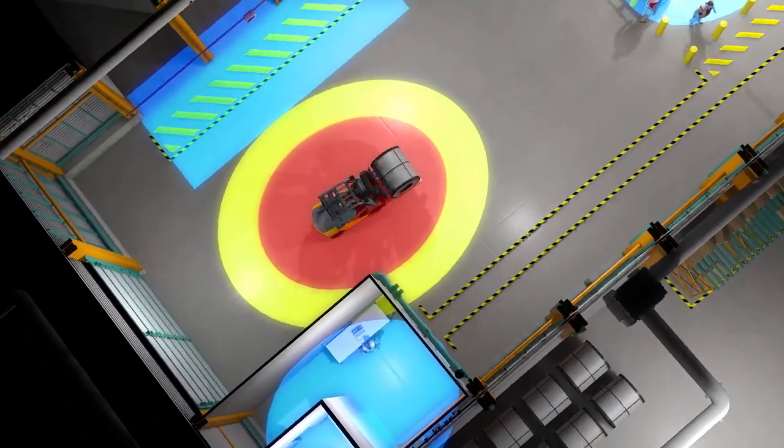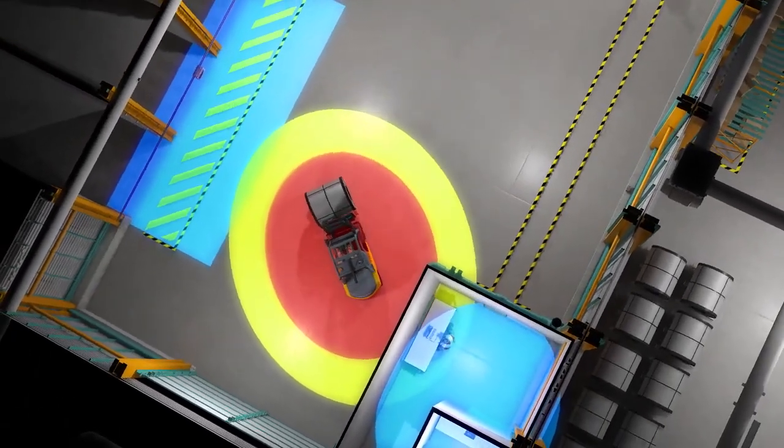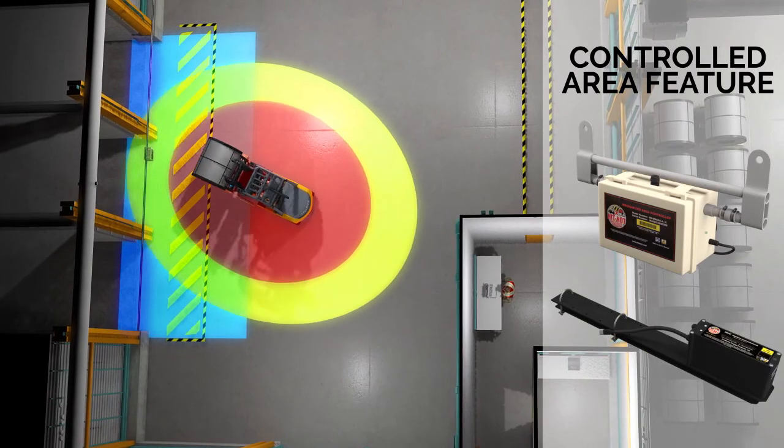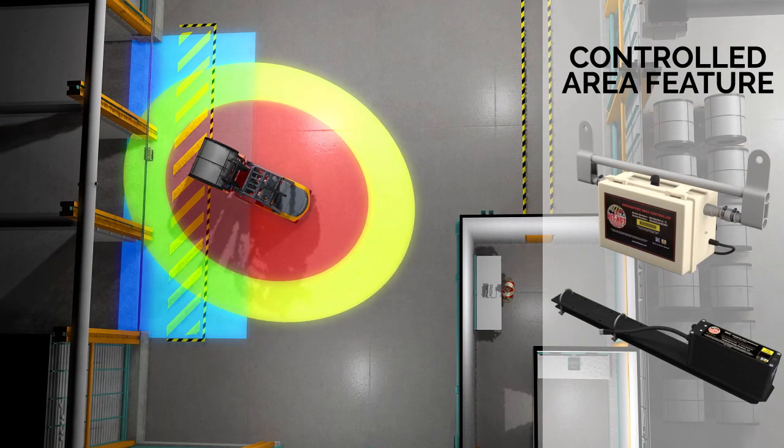The HITNOT Mechanized Area Controller can also shrink the magnetic field on the mobile equipment when in the MAC zone. This allows for a reduction in alerts when working in confined spaces, such as a loading dock. As the mobile equipment leaves the MAC zone, its magnetic field is automatically returned to its normal size.